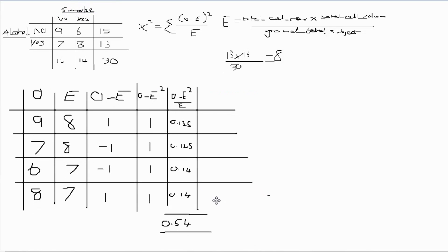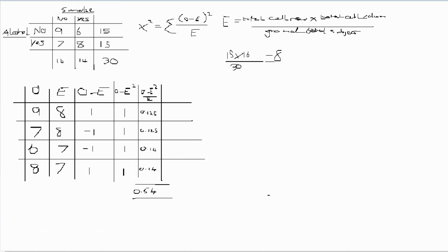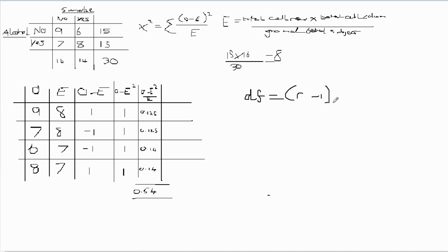Now we have our chi-square value, but we're not finished — we need to calculate our critical value. To do that, we calculate the degrees of freedom. The formula for degrees of freedom in a contingency table is: df equals (number of rows minus 1) times (number of columns minus 1). With two rows and two columns, that's (2 minus 1) times (2 minus 1).